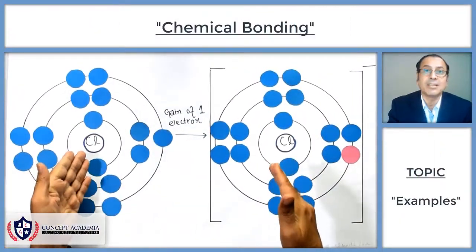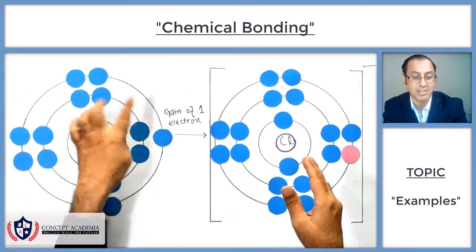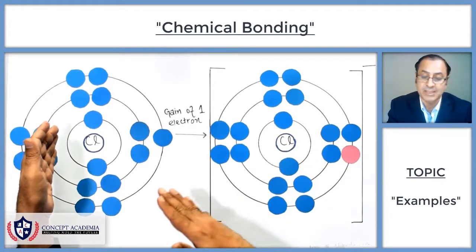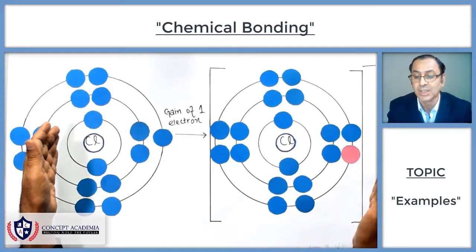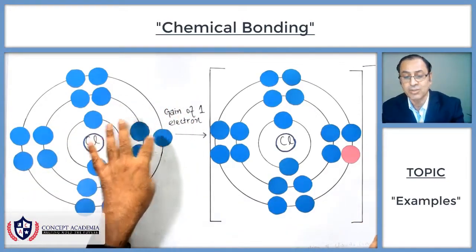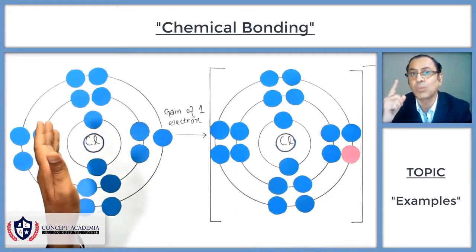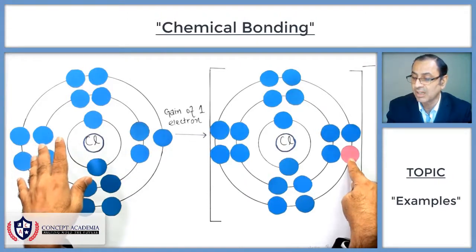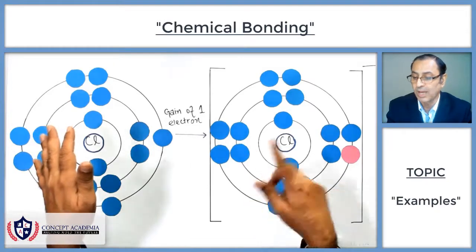Chlorine is a non-metal; it belongs to group 7 and has seven electrons in its last shell. It requires one more electron to complete its octet and achieve the noble gas electronic configuration, which gives it stability. With the gain of one electron it gets a negative one charge, becoming a negative ion. The different color used here shows the electron gained from another atom.